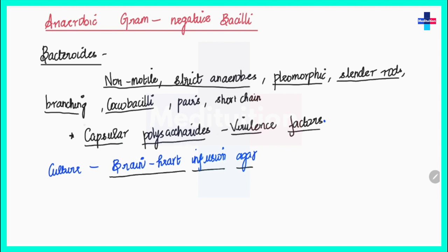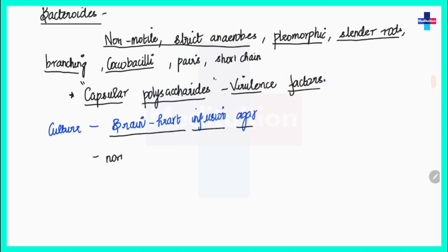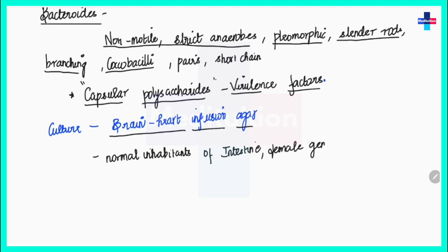The capsular polysaccharide evokes an immune response or antibody response that we can detect in patients with a Bacteroides infection. These organisms are normal inhabitants of the intestine, female genital tracts, and even the respiratory tract.